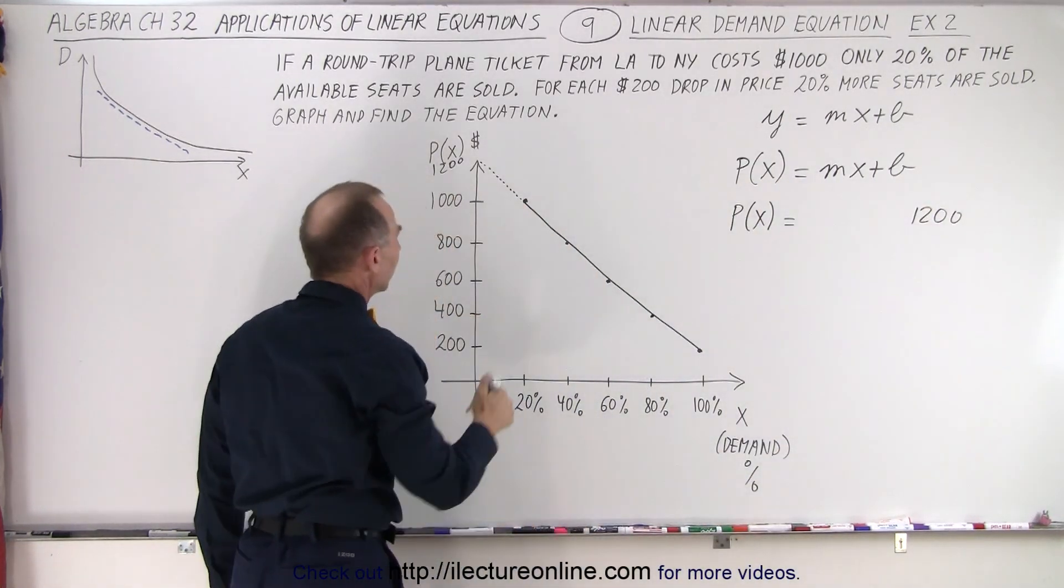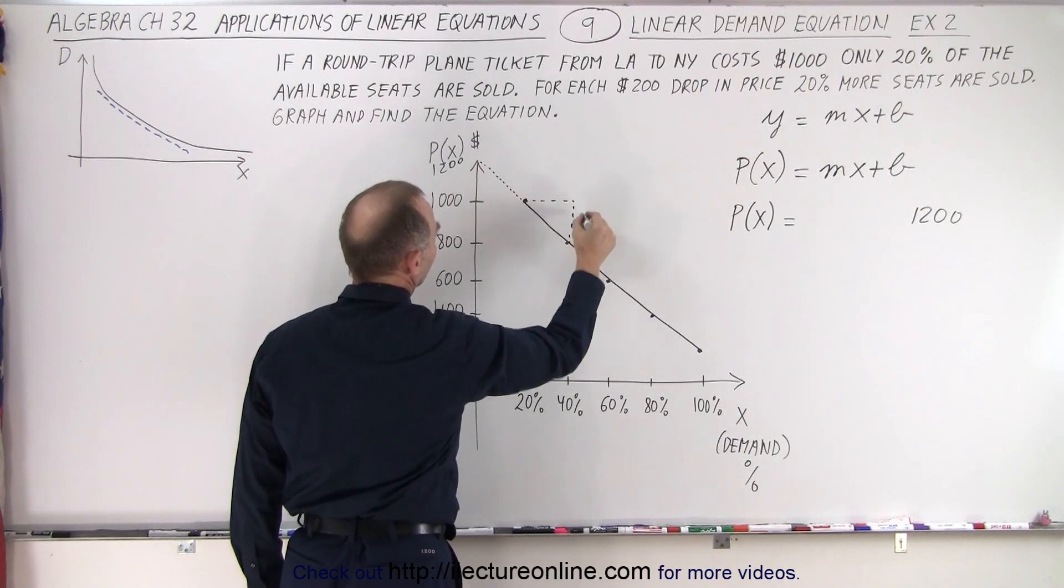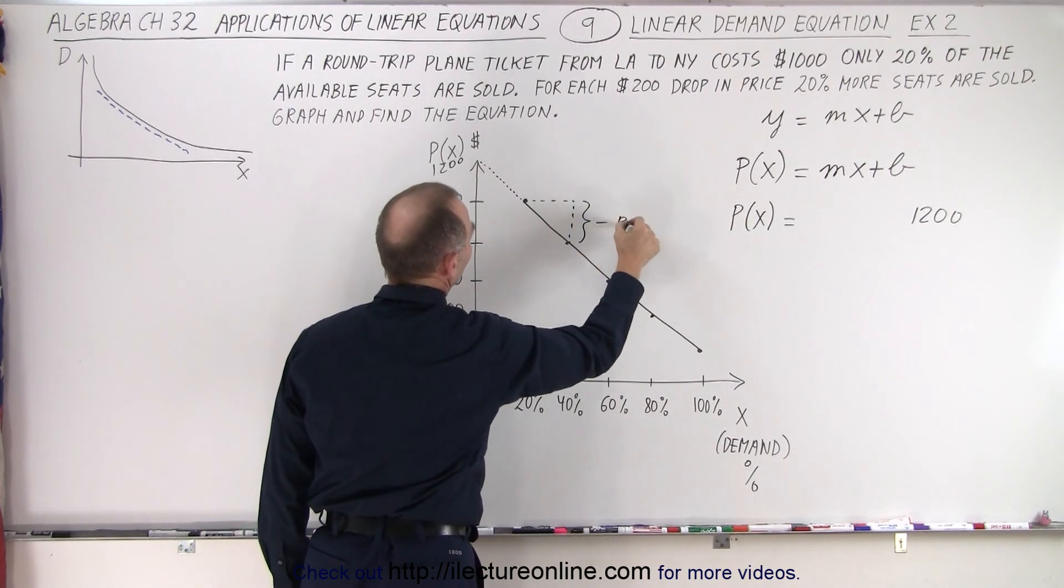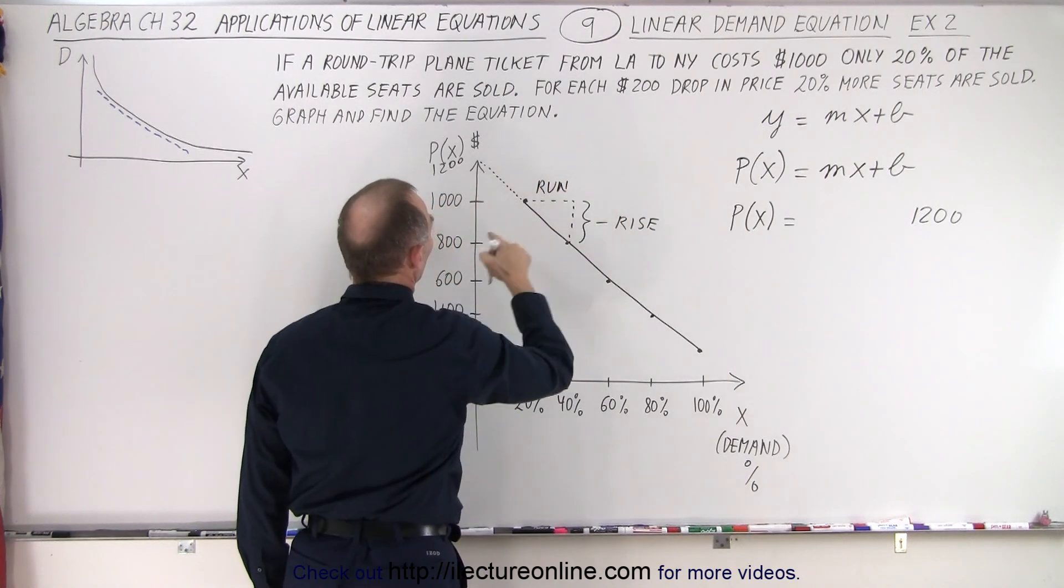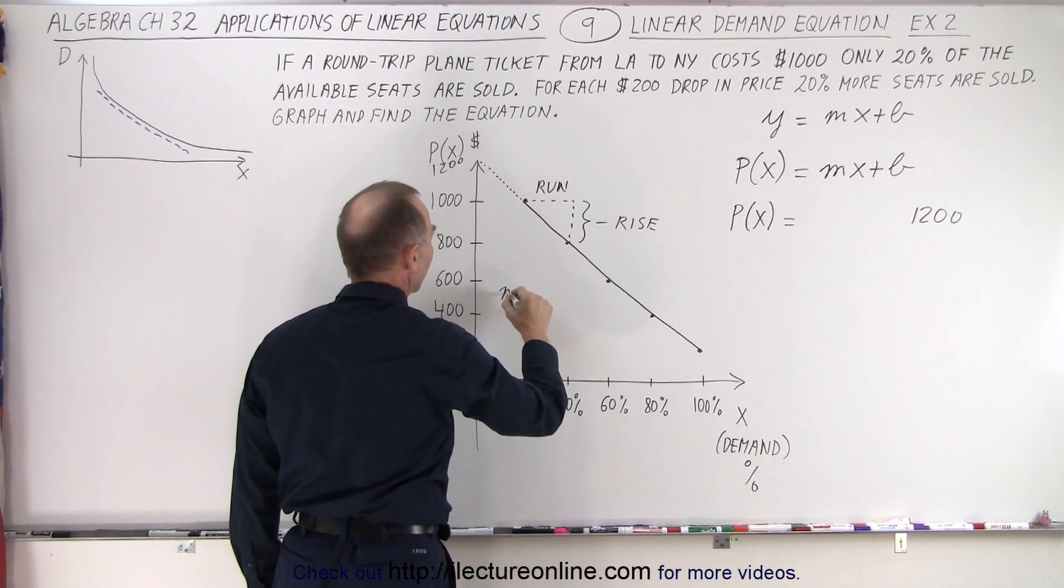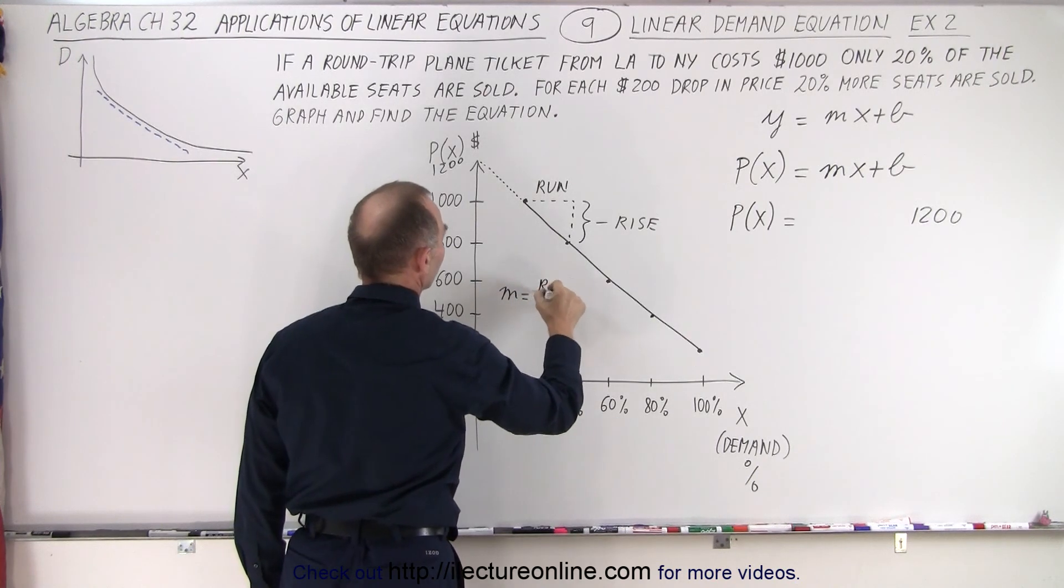Well, the slope is the rise over the run. In this case, the rise is negative. So this is the negative rise. And this is the run over here. So when the... Let's write it down. m is equal to the rise over the run.